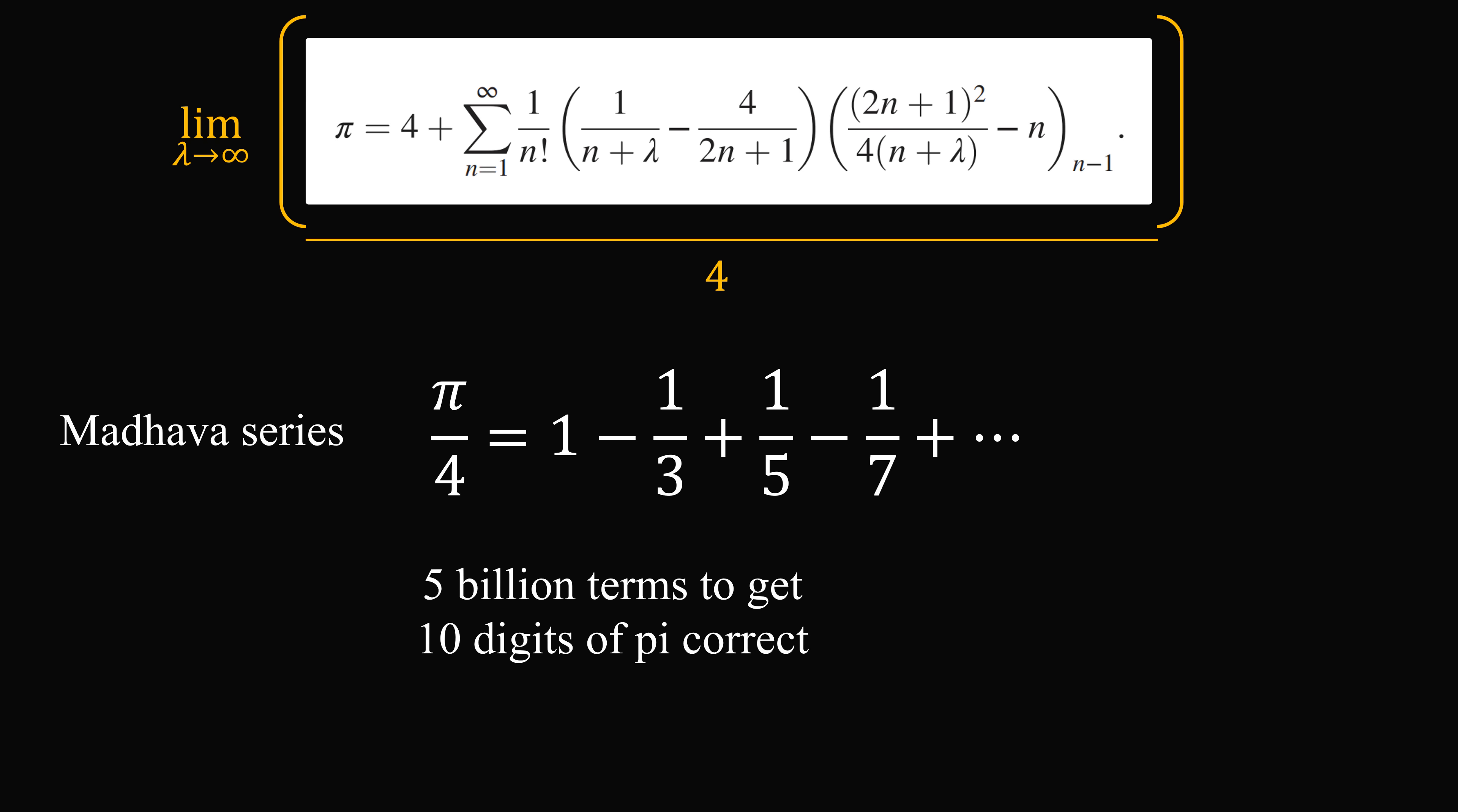Now I did mention that Madhava himself calculated pi to something to 10 to 14 digits. So he didn't use this formula alone, he used a modification of it. And you can view this new formula as a modification with a parameter lambda.